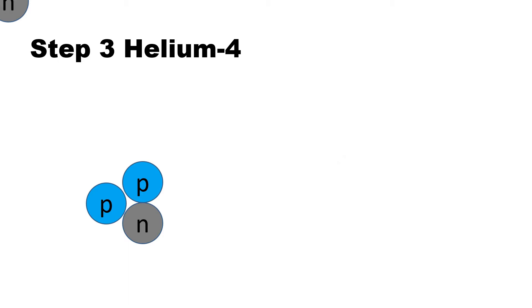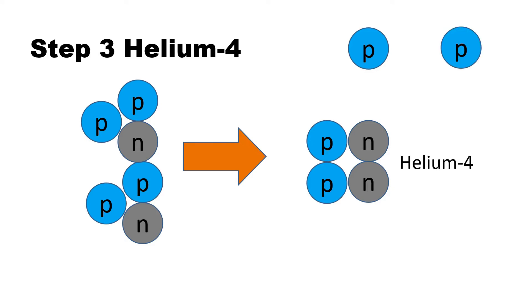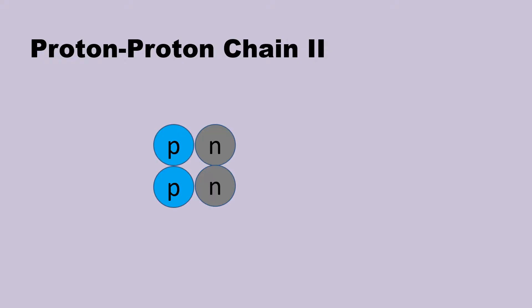Finally, we use helium-3 to produce a more stable helium-4 and more protons to repeat the proton-proton chain. The other version of the proton-proton chain will yield more isotopes such as beryllium and lithium.